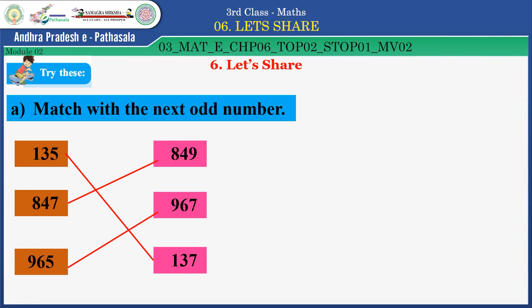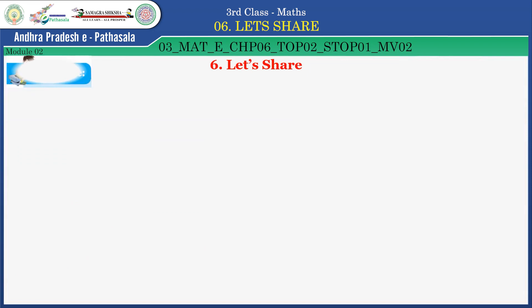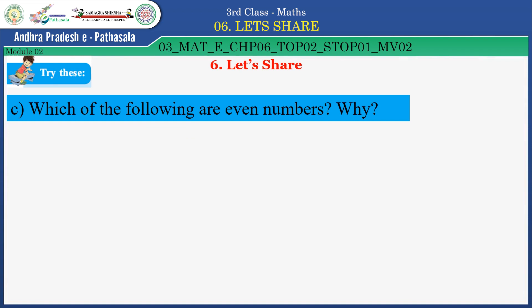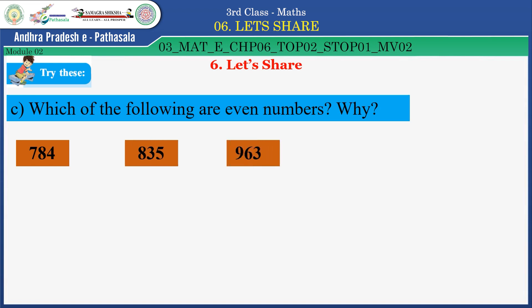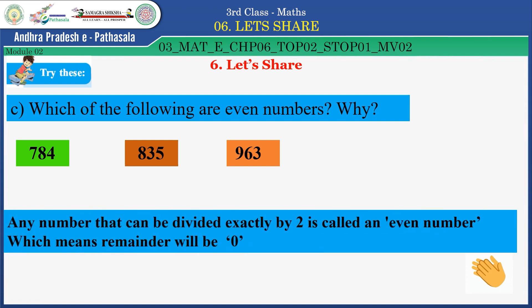Now look at this activity: which of the following are even numbers, and why? 784, 835, and 963. Which are even numbers? 784. Definition: any number that can be divided exactly by 2 is called an even number — the remainder will be 0. Well done, children.